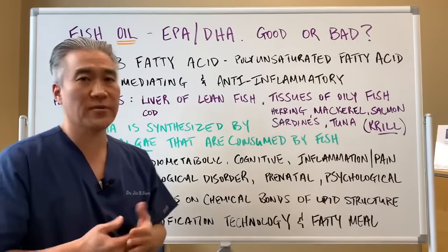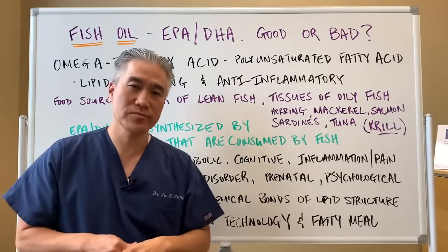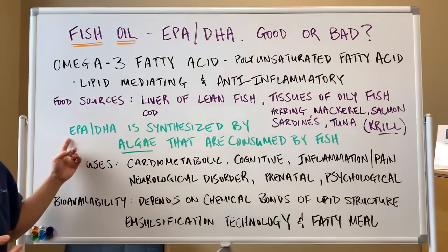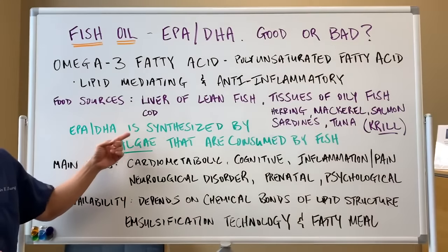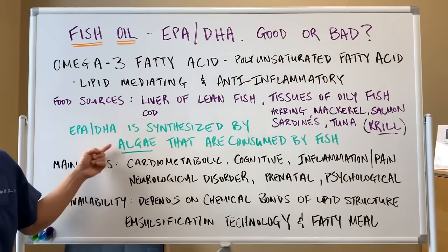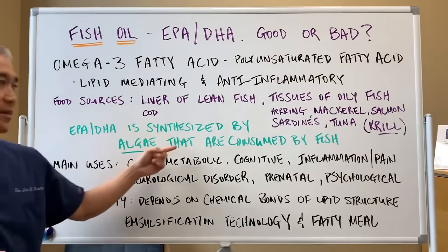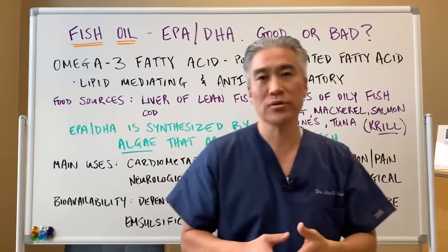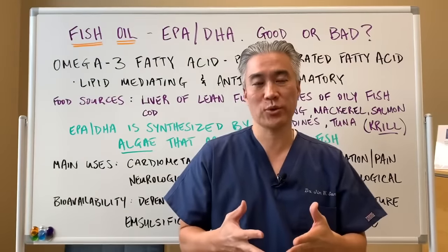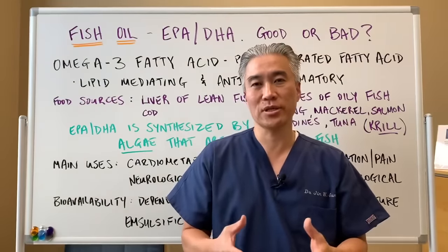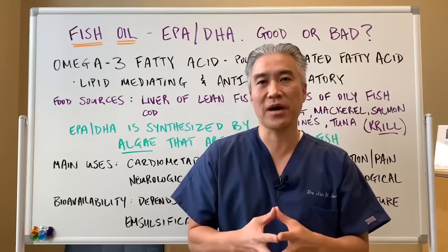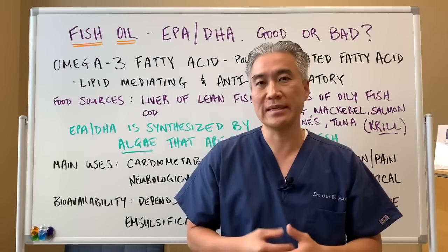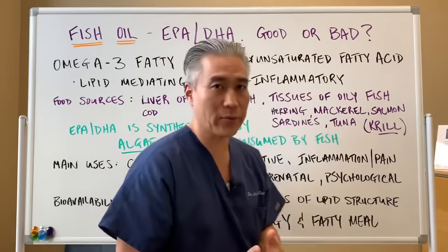You can also get omega-3s from algae. EPA and DHA are synthesized by algae that are consumed by the fish. Fish don't naturally come with fish oil — they eat algae, and it's the algae that produces the EPA, DHA, or the omega-3s.